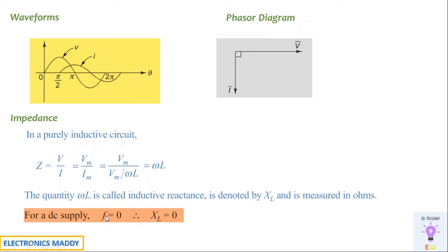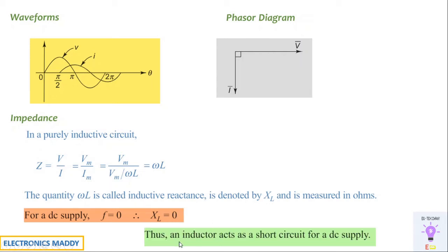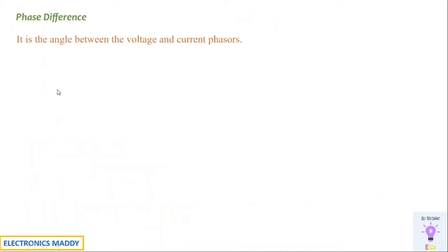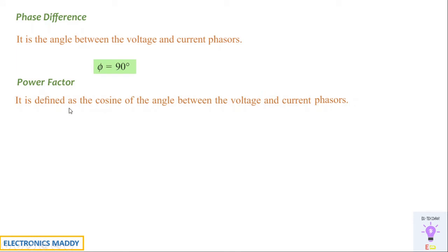For a DC supply, since frequency F = 0, ω = 2πF = 0, so XL = ωL = 0. This means when DC is applied to an inductor, it ideally acts as a short circuit. Regarding phase difference: as derived earlier, the phase difference between voltage and current is 90°. Power factor is defined as the cosine of the angle between voltage and current phasors: cos 90° = 0. So the power factor of a pure inductor is 0.